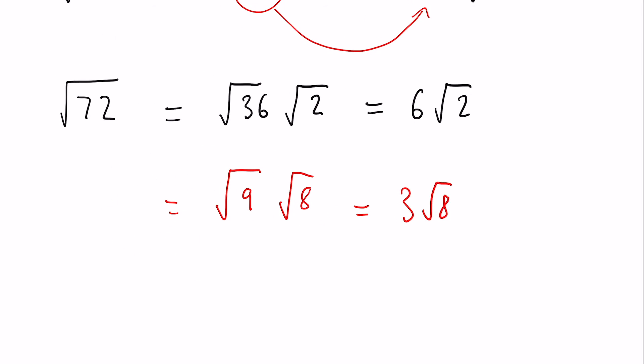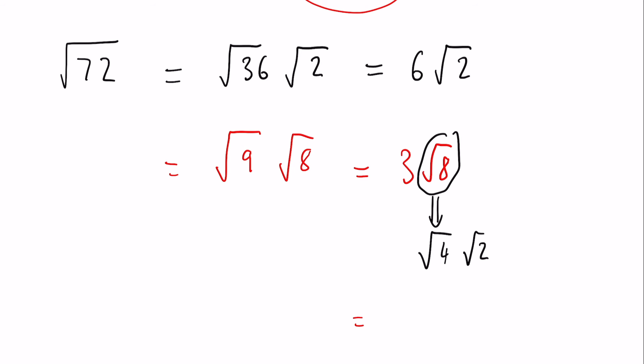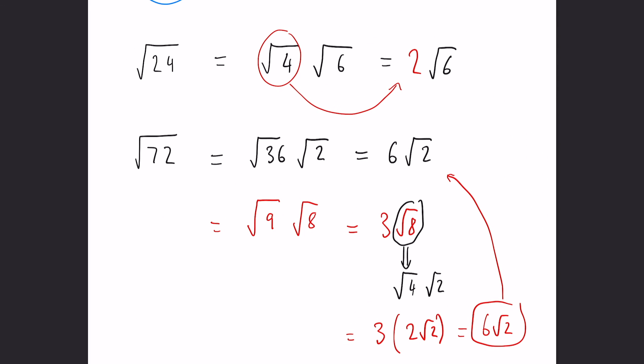However, our √8 can be split into √4 and √2 as well. This will eventually leave us with 3 lots of 2√2, which again will leave us with 6√2 at the end. So it will give us the same answer, but it's just a little bit more complicated. So it's always easier to pick the biggest square number if possible.